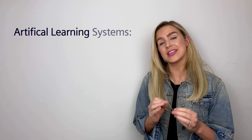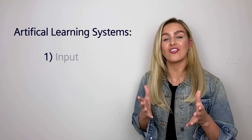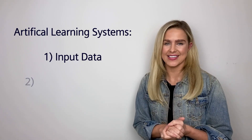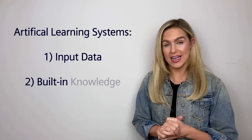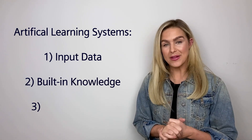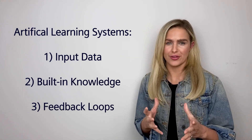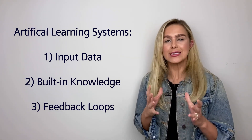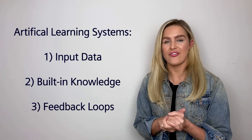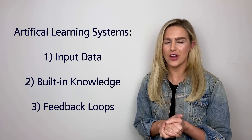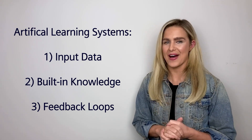When creating artificial learning systems, we must consider three critical aspects: the input data, the built-in knowledge for structuring models, and the feedback loop for refinement. So, let's break these down.